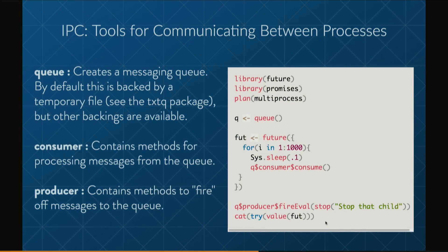That's where the IPC package comes along. IPC is a package devoted to providing mechanisms to communicate back and forth between processes and to ship computations and expressions between these threads for execution. Here's simple example code: we create a queue. These messaging queues can be backed by some sort of external database that both processes have access to. By default, that is done via temporary files using the txtq package, but other backings are available — Redis is also an implemented option.